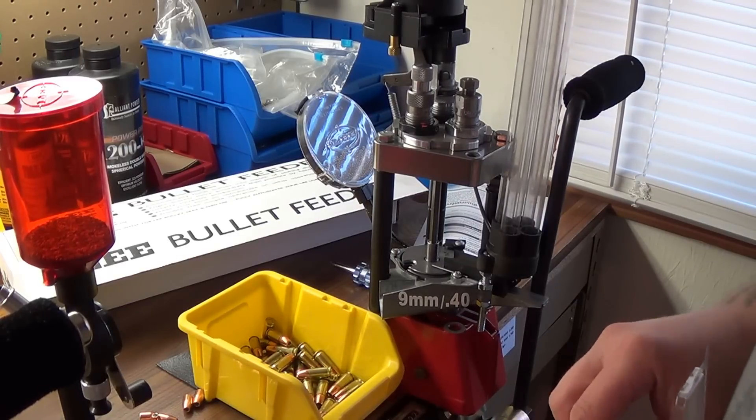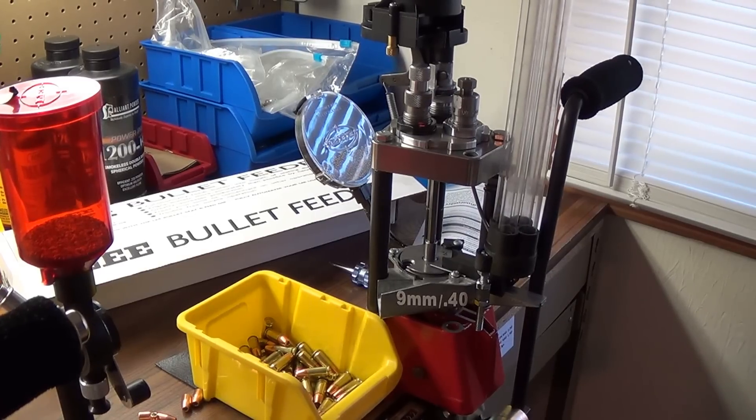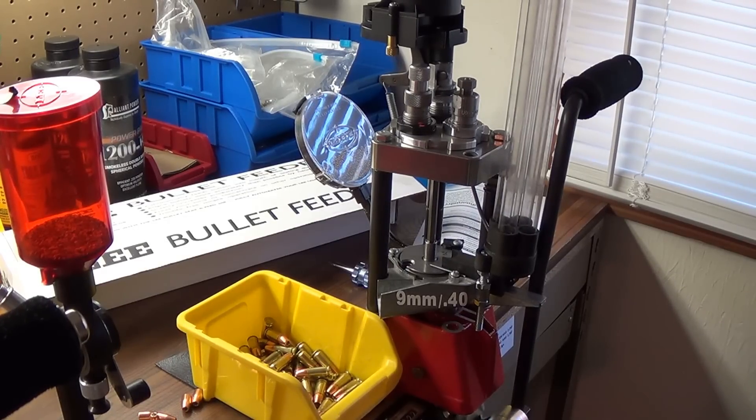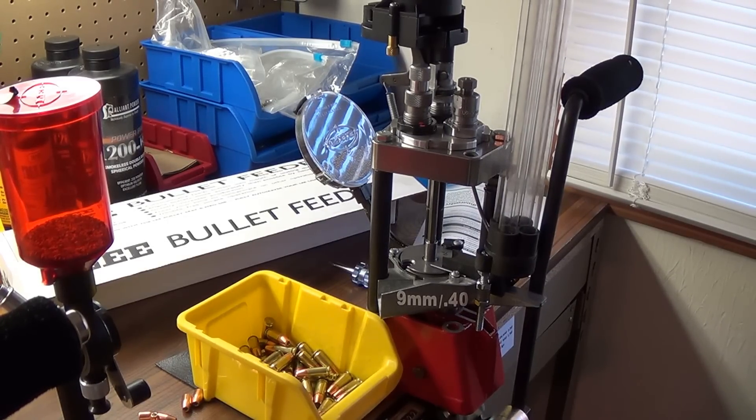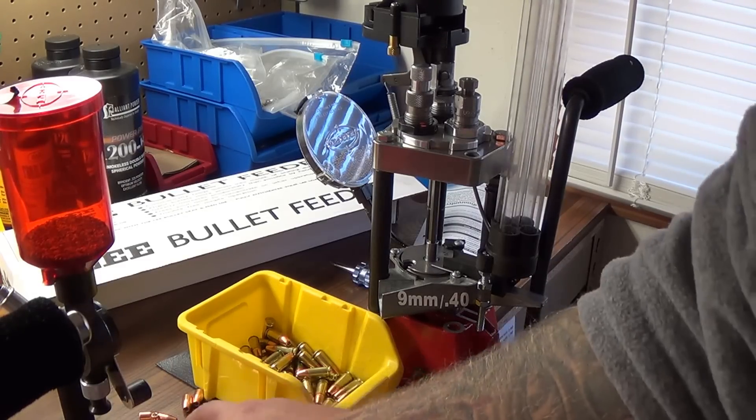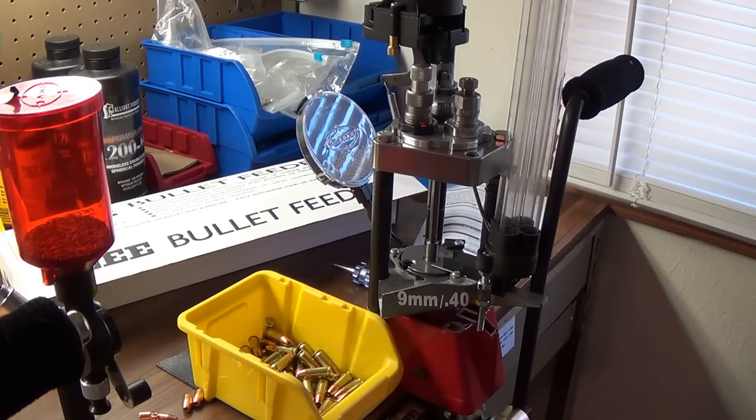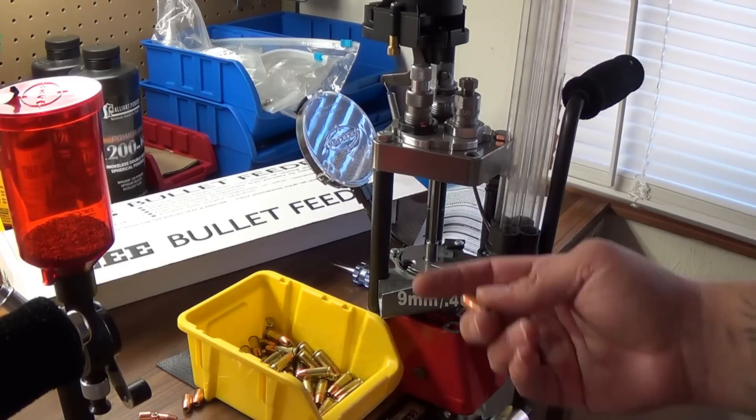Okay, setting up the Lee bullet feeder. First thing you want to do is make sure you order the right one. There's a lot of forums where people say it doesn't feed right, and it's because they didn't order the right bullet feeder for the bullet they're using. Even though this is for nine millimeters, so it's 3.55, there are different dies for it because of the length of the bullets.